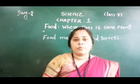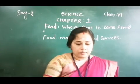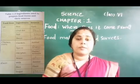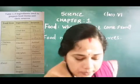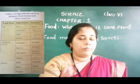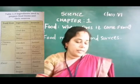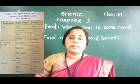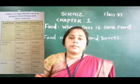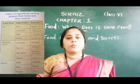So you just take your textbook and refer Table 1.3. Write some food items in the first column, the ingredients of those food items in the second column, and the sources in the third column.